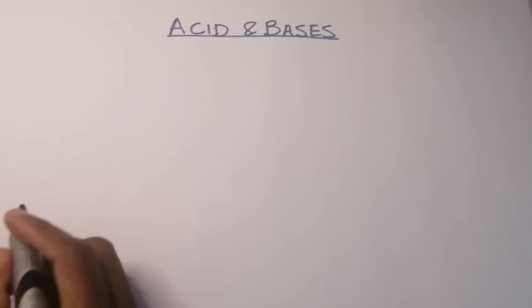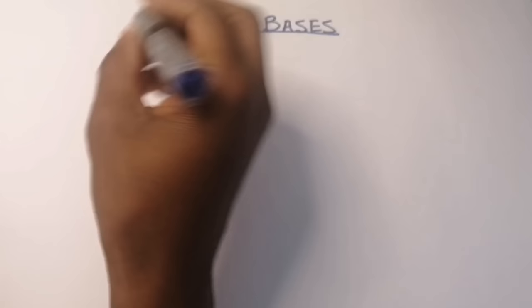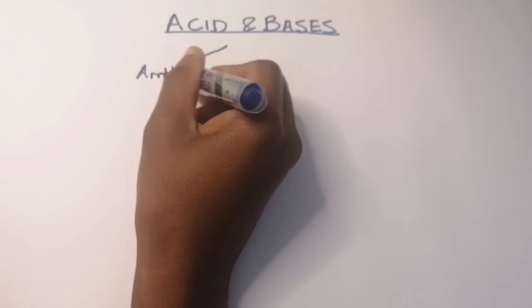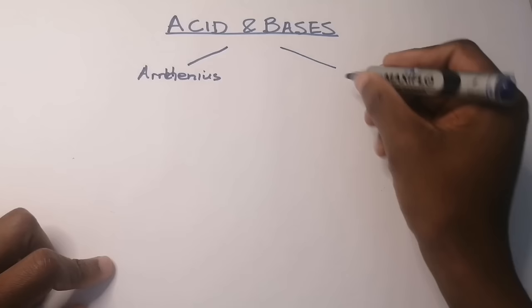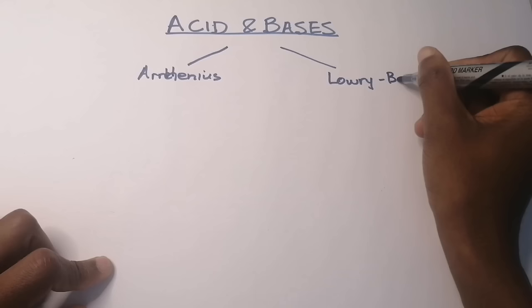When we start with acids and bases, we're going to limit our scope to two theories. The first is referred to as the Arrhenius theory. The second is the Lowry-Bronsted theory of acids and bases — named after two people.